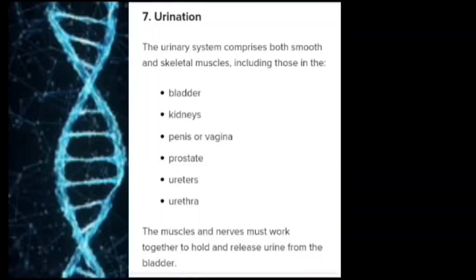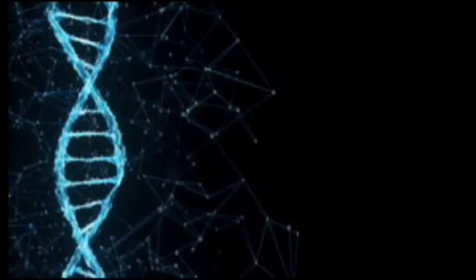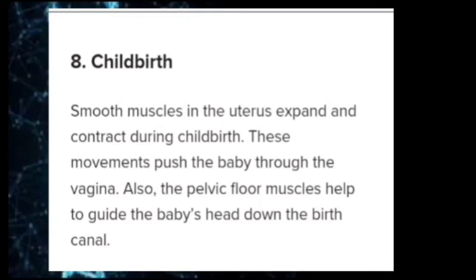The urinary system comprises both smooth and skeletal muscles, including those in the bladder, kidneys, penis or vagina, prostate, ureters, and urethra. The muscles and nerves must work together to hold and release urine from the bladder.